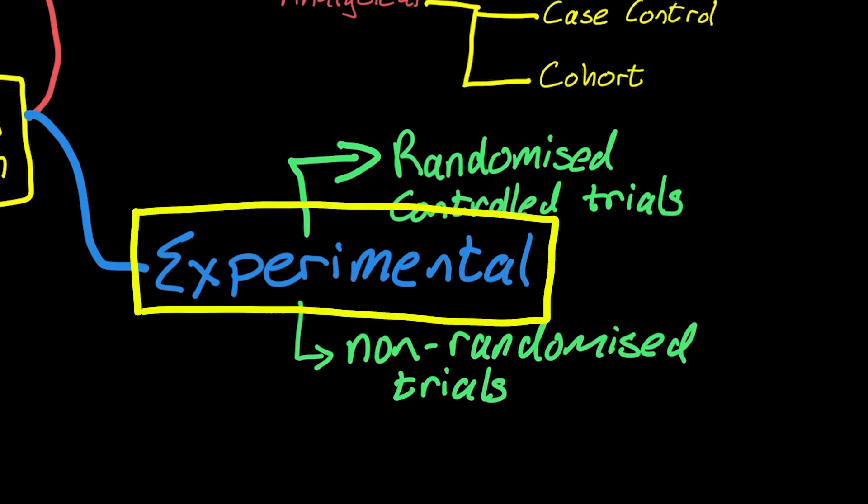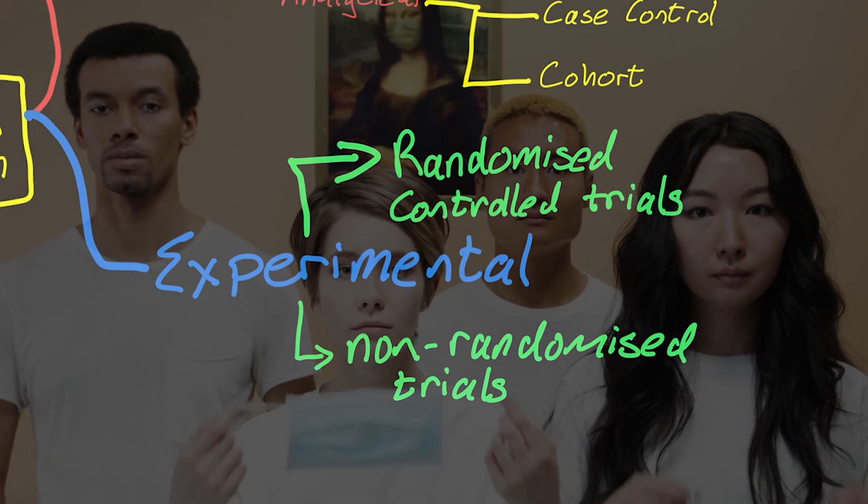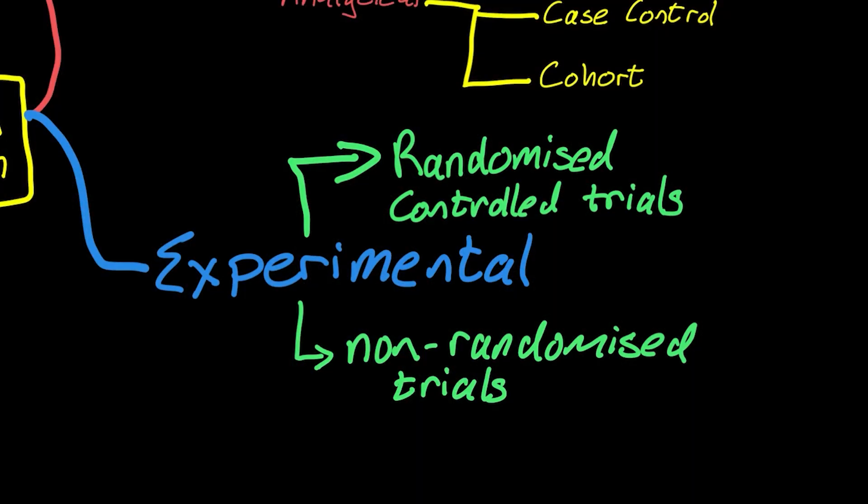Now, let's move on to experimental studies. Here's where we get strong evidence. And it's because we actually intervene. We do something. We either give people a drug or remove a hazard, an exposure, a risk, and we see what happens. If it's a randomized control trial, people are put into two groups randomly and either exposed or not exposed to the intervention. And then we see what happens.